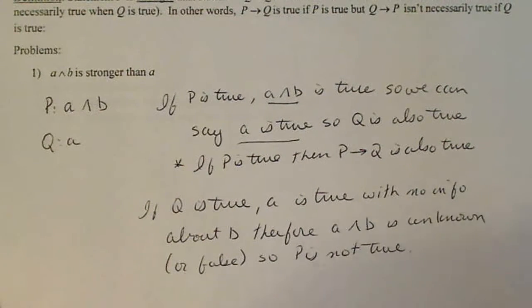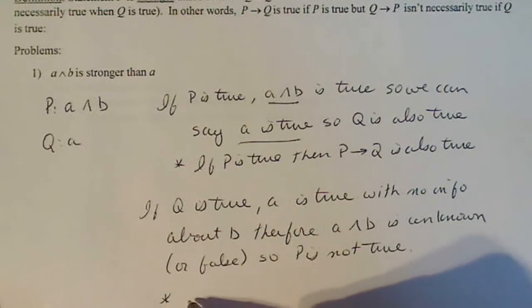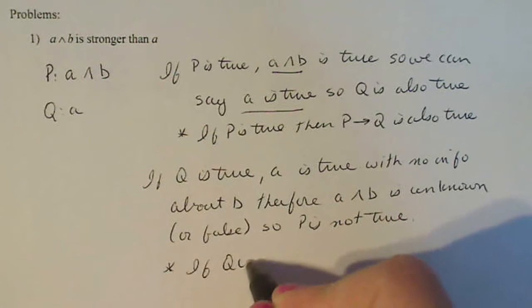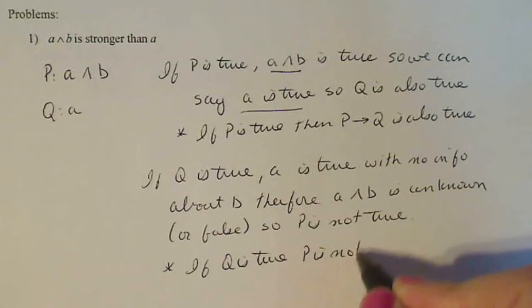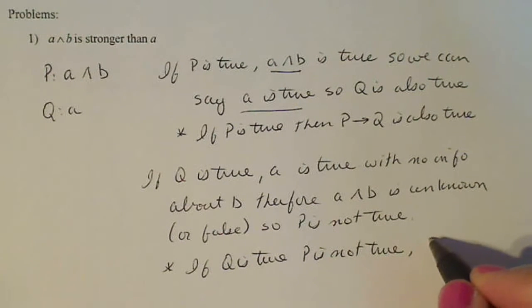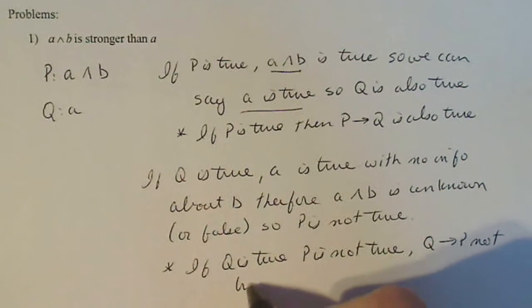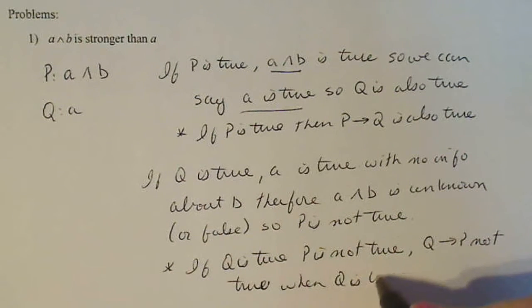I mean in some cases, but it has to be all cases. Remember this is mathematics. So what I did, what did I show? If Q is true, let me shift this a little bit. If Q is true, P is not true. So Q implies P not true when Q is true.